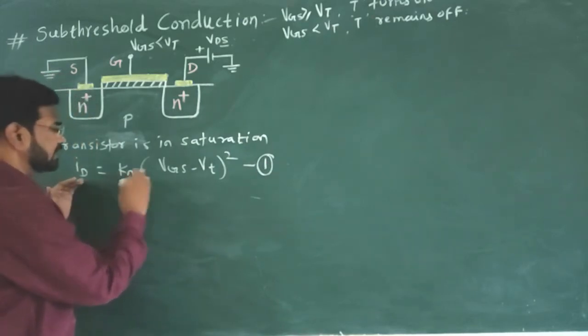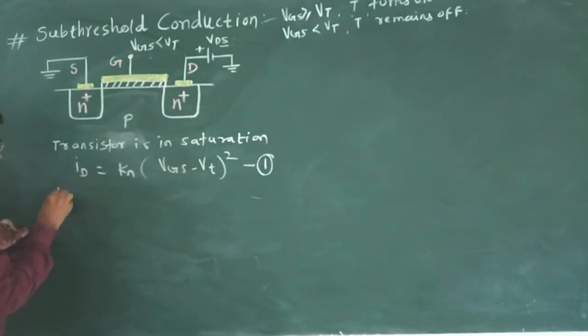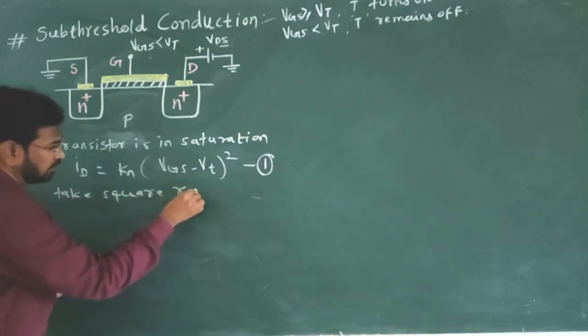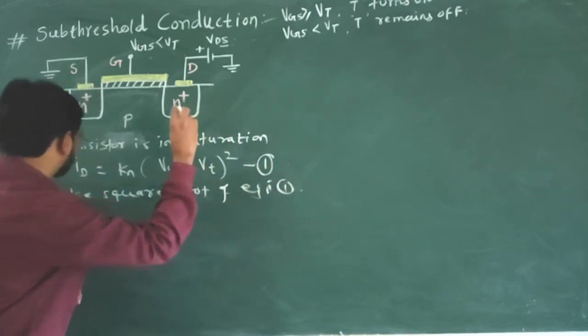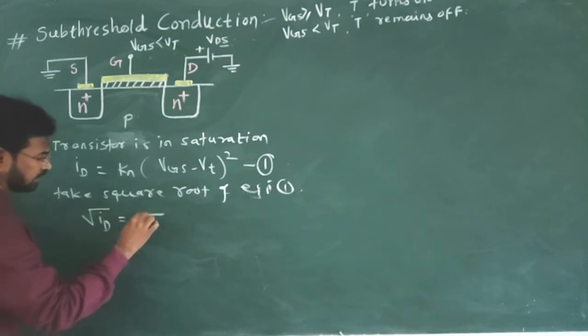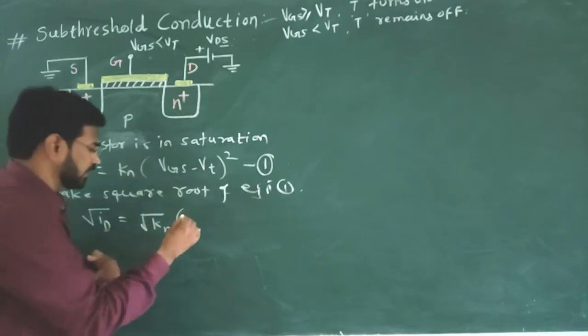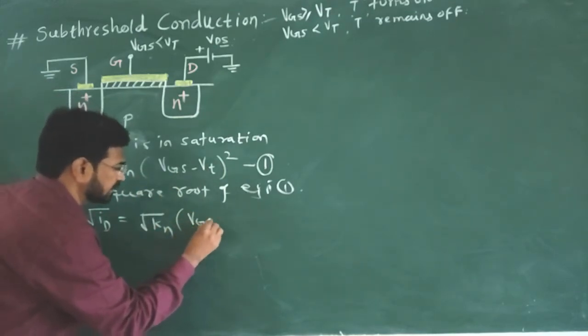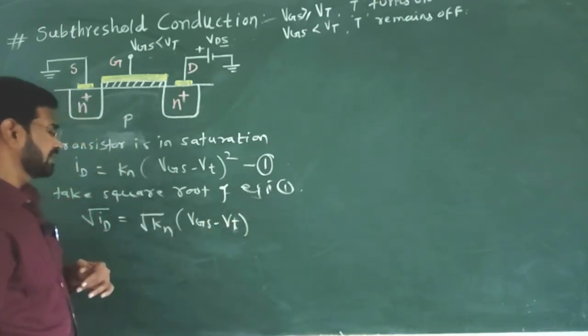And this gives us the dependence of Id on Vgs. Let us take the square root of this equation. We will get square root of Id is equal to square root of Kn into, already it is square, so it will be out of square root. So it is Vgs minus Vt.